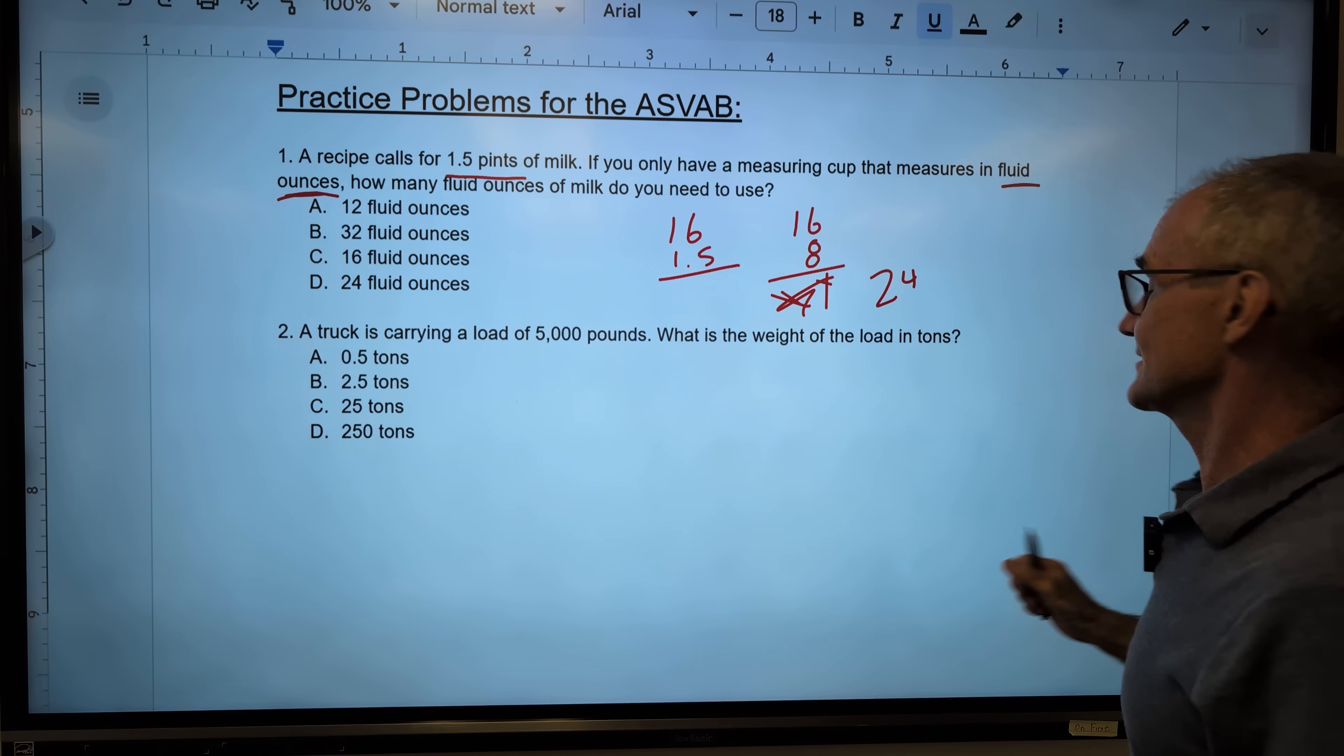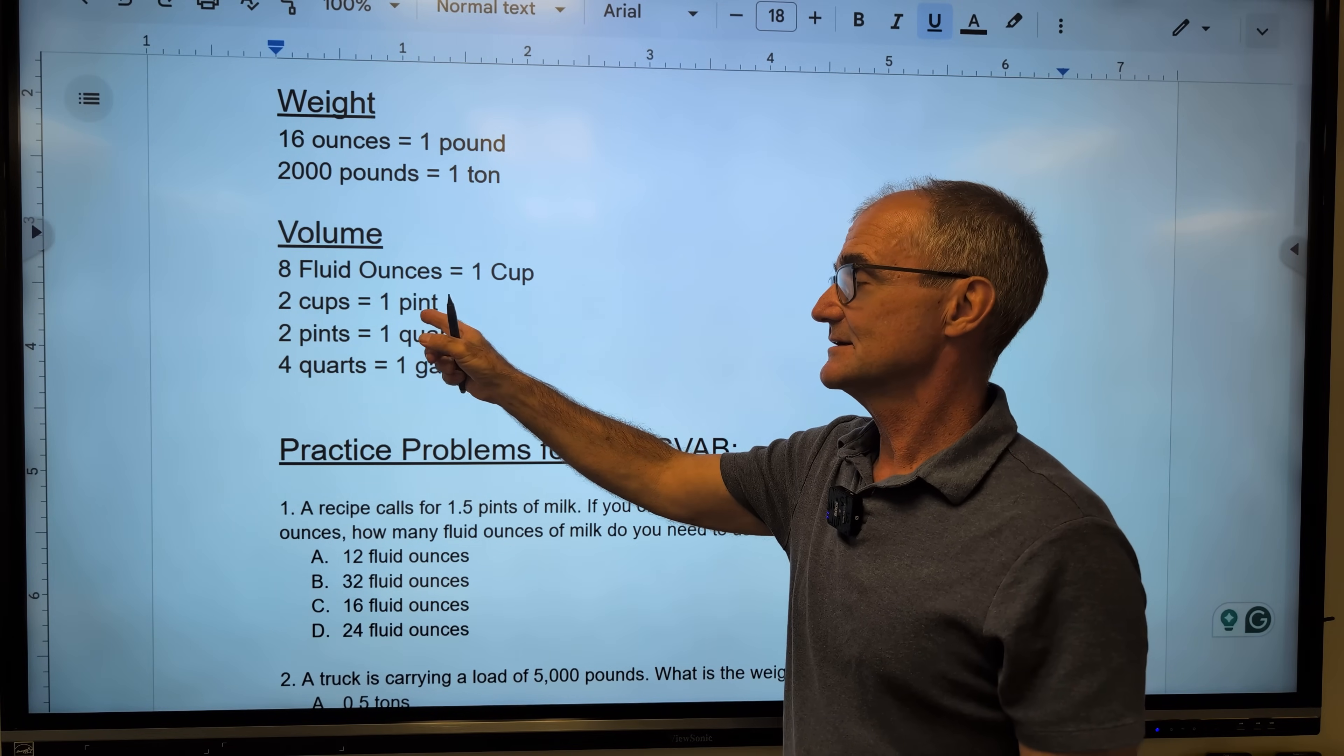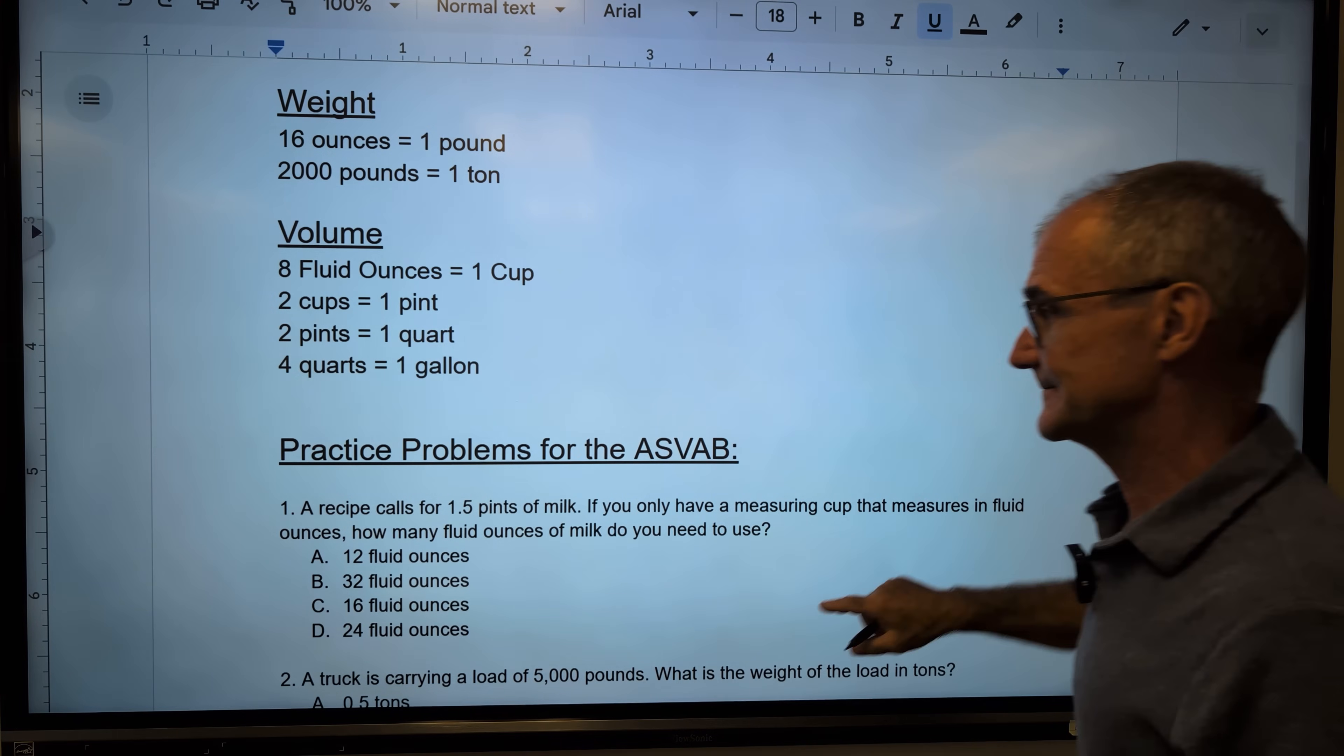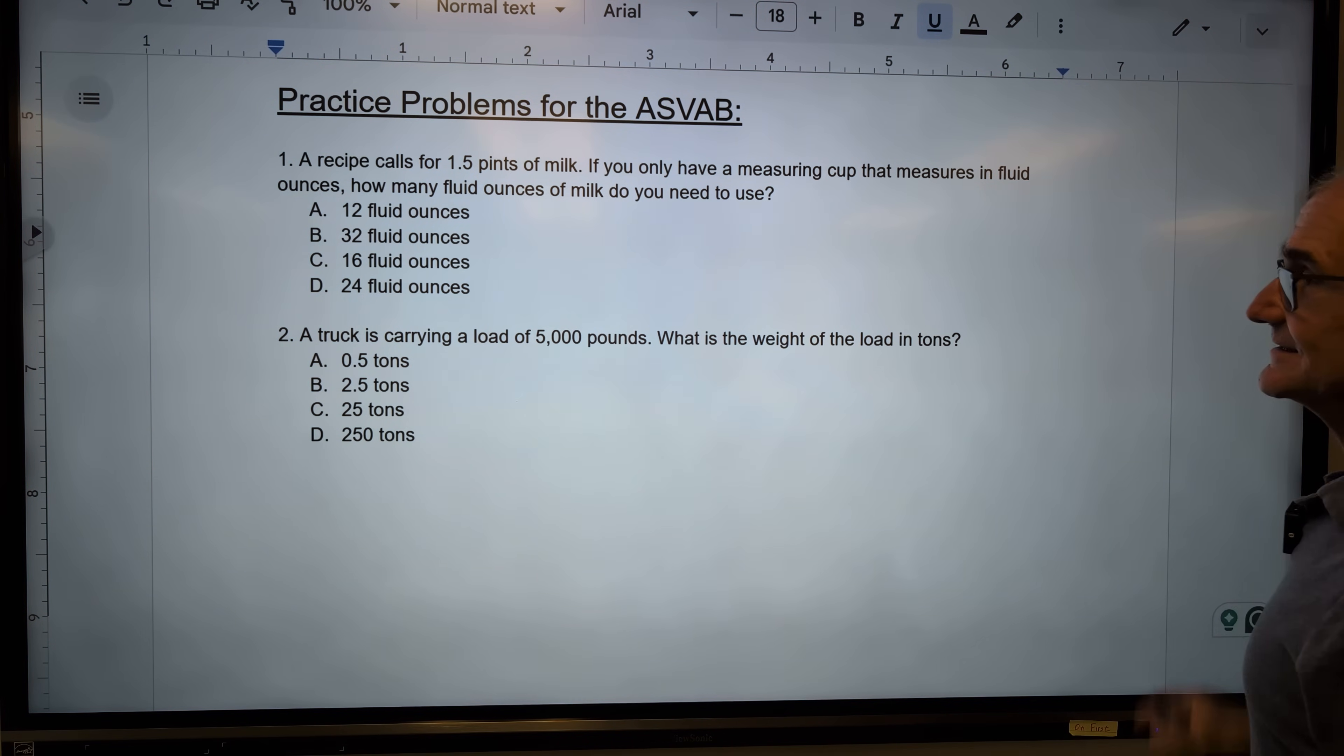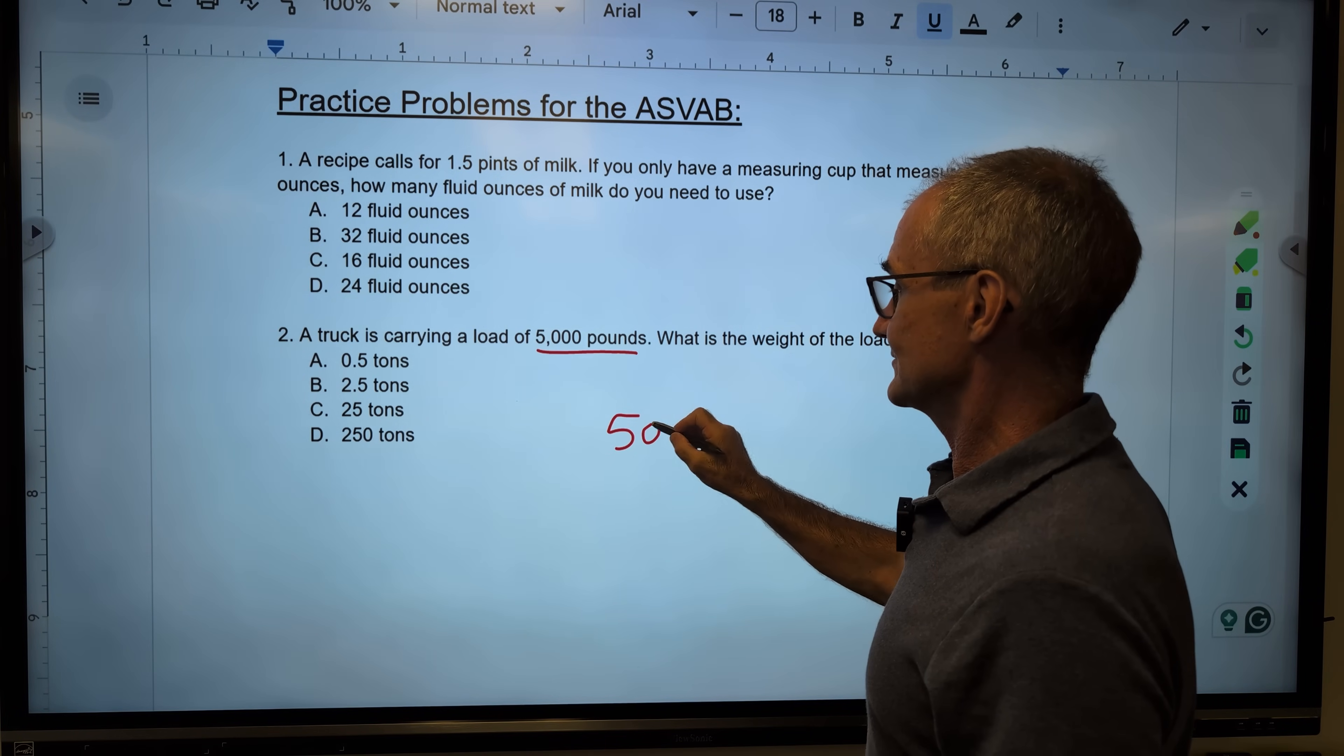So correct answer is answer D. The way I got 16 ounces to the pint, let's go back to this. There are 8 ounces to the cup, 2 cups to the pint. So that means I got 2 times 8 gives me 16 ounces to the pint. I know they are hard. Okay, number 2, a truck carrying 5,000 pounds, what is the weight in tons?